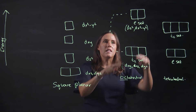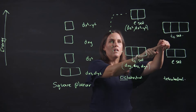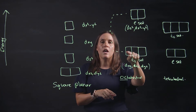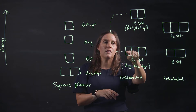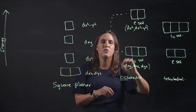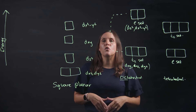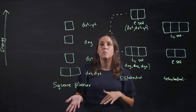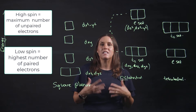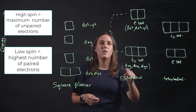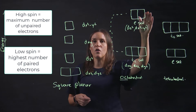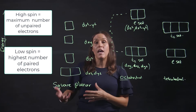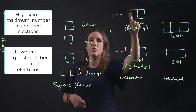When looking at octahedral, tetrahedral, and square planar complexes, the energy gap between the sets is important. When filling octahedral and tetrahedral, depending on that energy gap, you may fill the bottom degenerate set and the top degenerate set at the same time before doubling up. The two ways to describe the spin of electrons are high spin — the maximum number of unpaired electrons, where you fill the bottom and top sets before doubling up — and low spin, where you have the highest number of paired electrons and fill the bottom set completely before moving to the top.